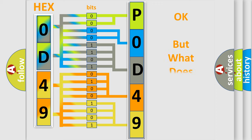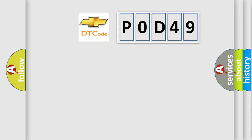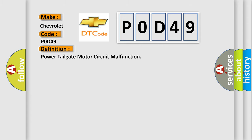We now know how the diagnostic tool translates received information into a more comprehensible format. The number itself does not make sense if we cannot assign meaning to what it actually expresses. So, what does the diagnostic trouble code P0D49 interpret specifically for Chevrolet car manufacturers?